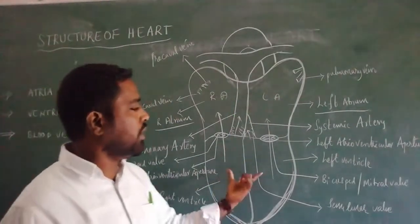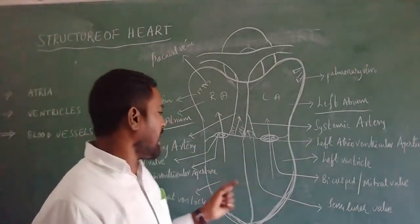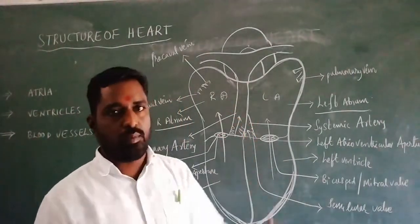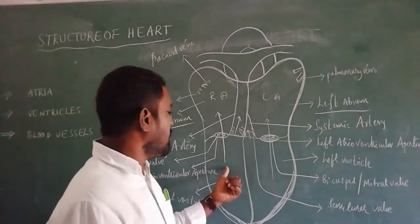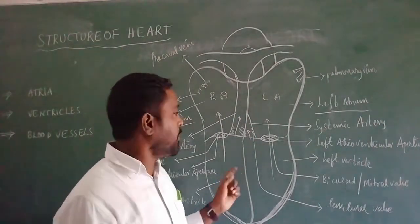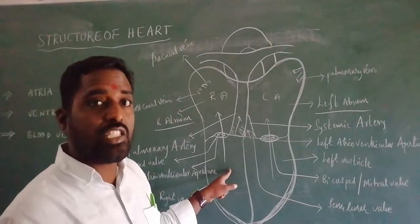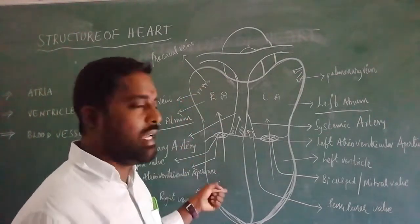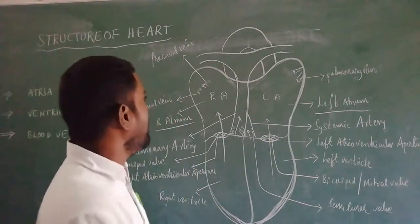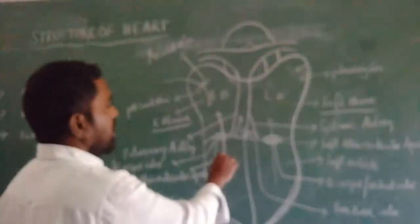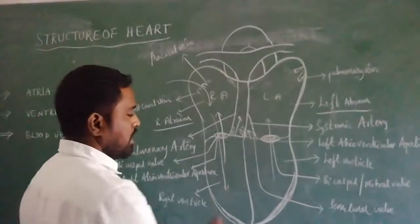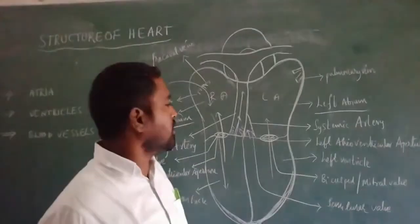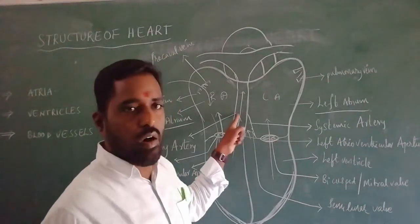Ventricles are the lower chambers of the heart, and they are called pumping chambers because they pump blood to different parts of the body. The right ventricle pumps blood to the lungs for oxygenation — it receives deoxygenated blood from the right atrium, which received it from the body parts, and then sends it to the lungs through the pulmonary artery.